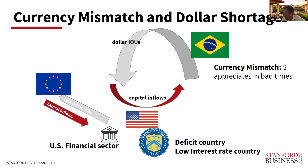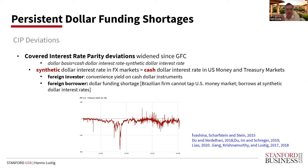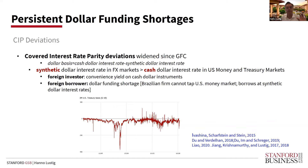Occasionally, what you get is acute dollar funding shortages, and the way these manifest themselves is in covered interest rate parity deviations — these will feature prominently in Wenjin's talk. If you look at the dollar basis — the cash dollar interest rate minus the synthetic dollar interest rate — regardless of how you measure it, it has consistently been negative for the dollar against other G10 currencies since the great financial crisis.